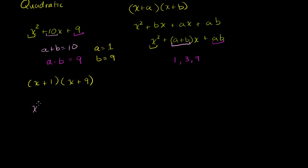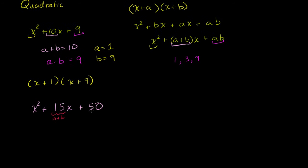Let's try x squared plus 15x plus 50. Same drill — we have an x squared term, a first degree term, and a constant term. The first degree coefficient should be the sum of two numbers, and the constant term should be the product of those same two numbers. So we need two numbers that when multiplied give 50, and when added give 15. Let's think about the factors of 50: 1 times 50, 2 times 25, 5 times 10.